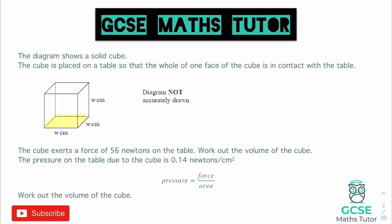For this question, let's think about our formula: pressure equals force over area. We want to find something that will help us work out the volume. If we can get the area of the bottom face, we can find the side lengths, and since it's a cube we can multiply all three lengths together for the volume. You can either rearrange the formula for area or use a formula triangle — whichever you prefer. Covering up area in the triangle gives us area equals force divided by pressure.